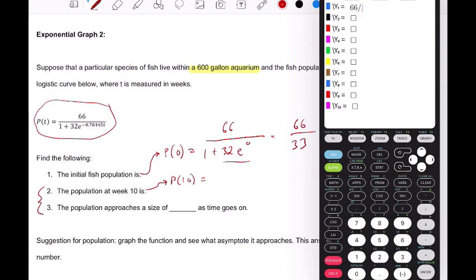66 divided by, get those parentheses in there, 1 plus 32, and then e to the power of negative 0.78, 445, and x. Does that look good? Double check it. Okay, it looks good.